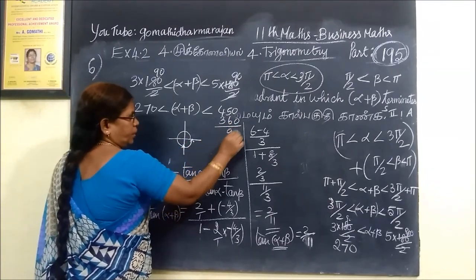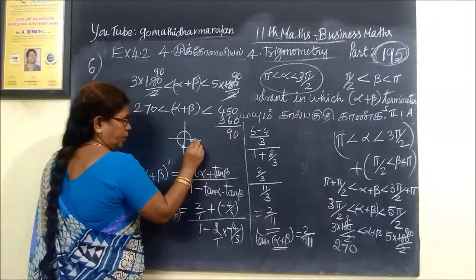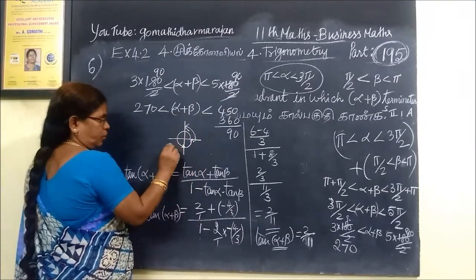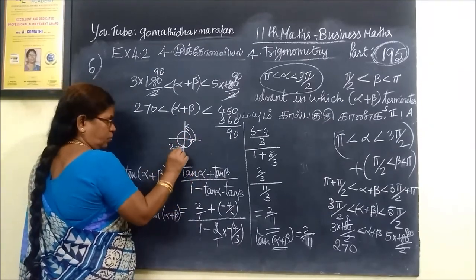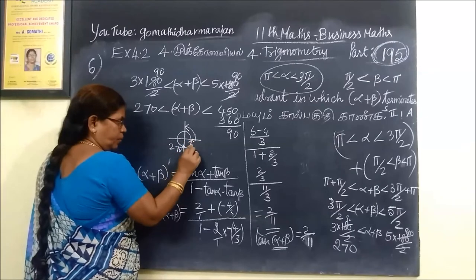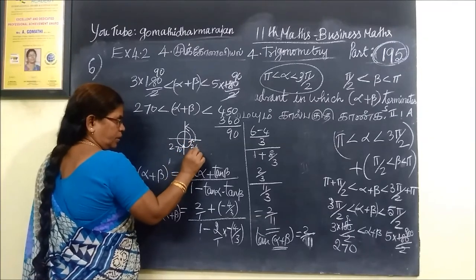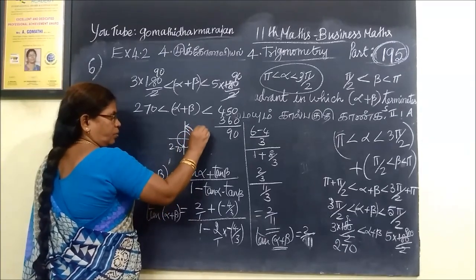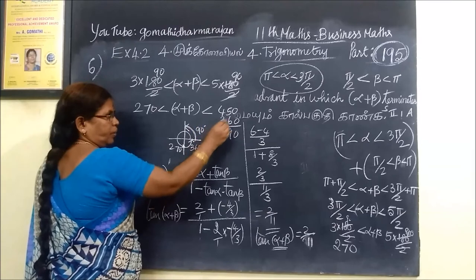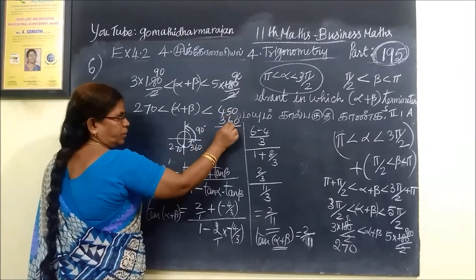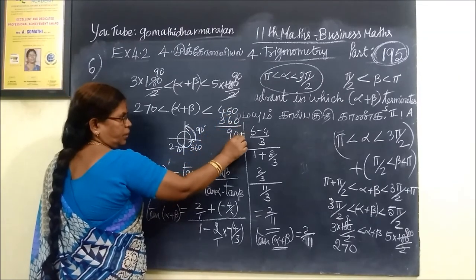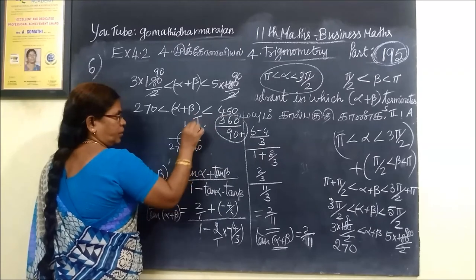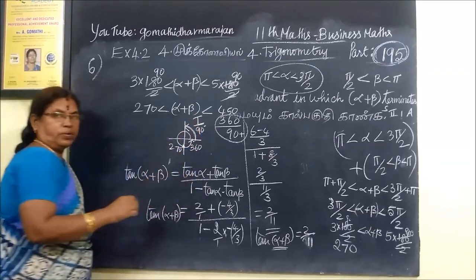Writing the quadrant values: 1 into 90 is 90, 2 into 90 is 180, 3 into 90 is 270, 4 into 90 is 360, and 5 into 90 is 450. So alpha plus beta lies between 270 and 450, which means it is in the third or fourth quadrant.